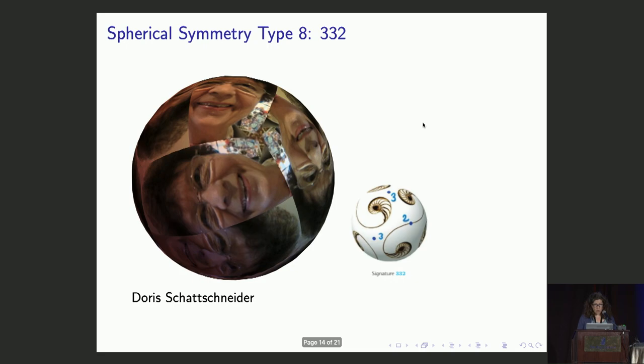So here we have type 3-3-2, three-fold rotation points in two different places, and two-fold rotation at Doris Schatznider's eyes.